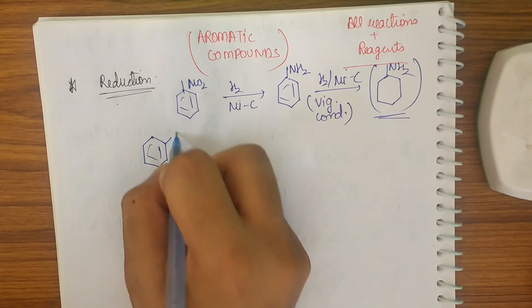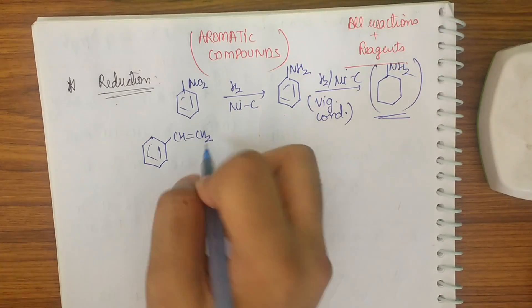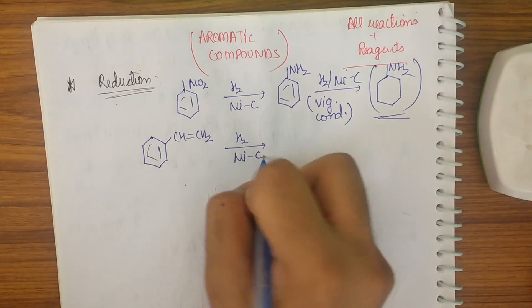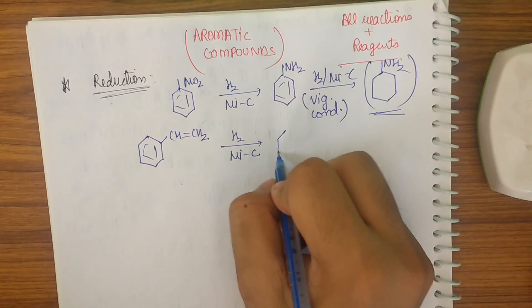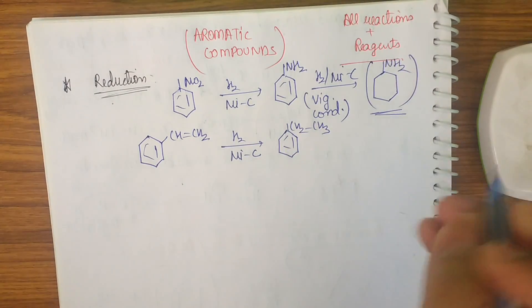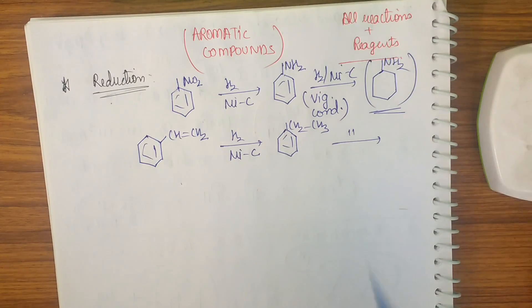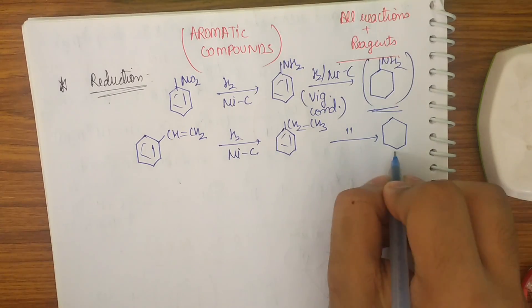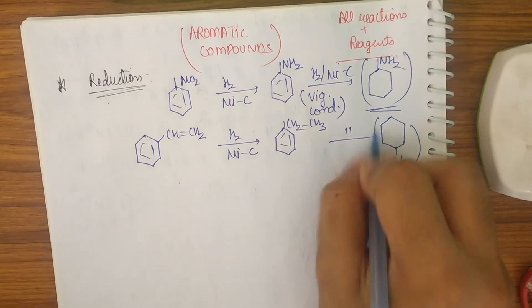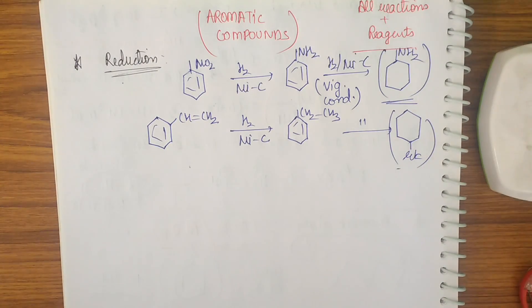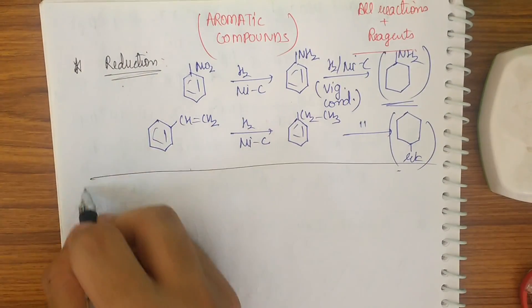Taking allyl benzene reacted with H₂/Ni: first, the linear chain on the benzene is reduced to CH₂CH₃. Under vigorous conditions (H₂/Ni, vigorous), the ring is also reduced, giving cyclohexane ethyl. This is basically reduction. Now let's go to oxidation, one of the most important topics in this chapter.